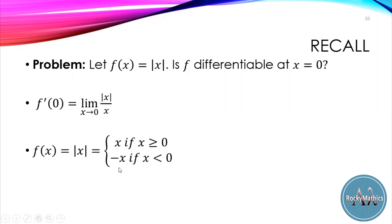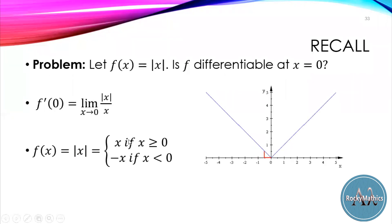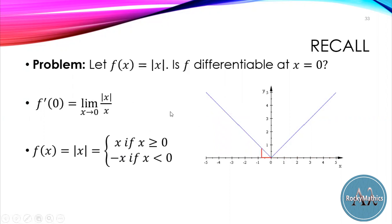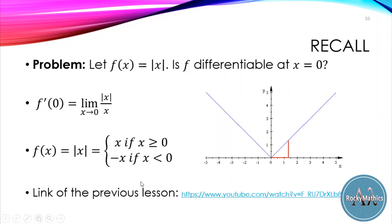The absolute value is a piecewise defined function because it comprises two expressions over a specified domain. As you can see in this image, this is the graph of the absolute value. If you were not able to watch our previous discussion, you can click the link below for more information.